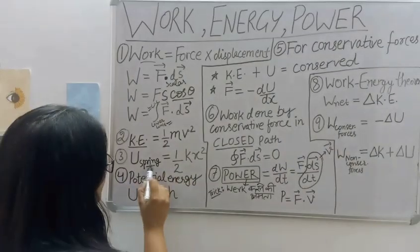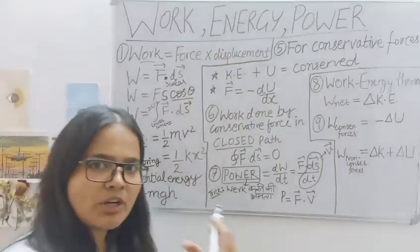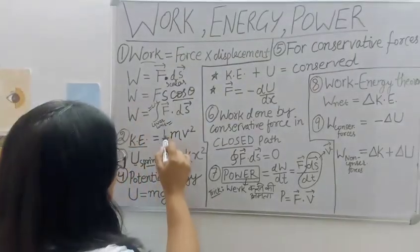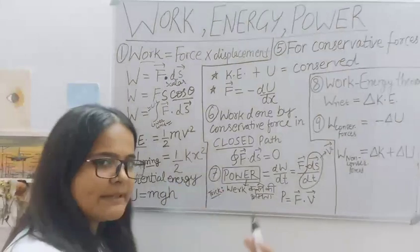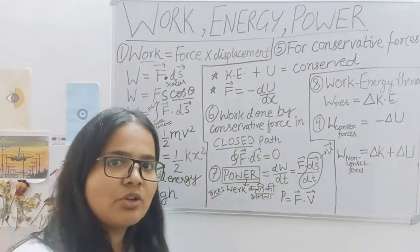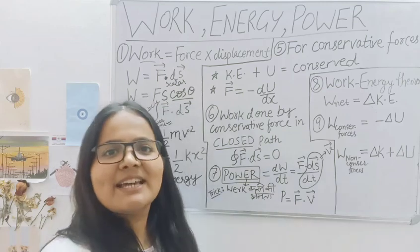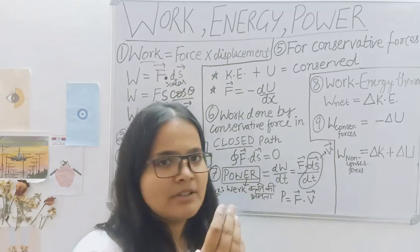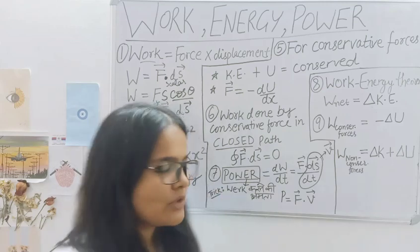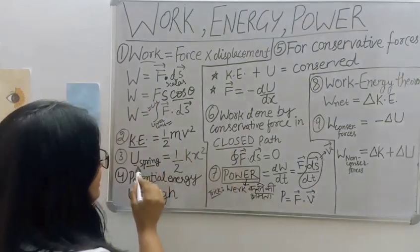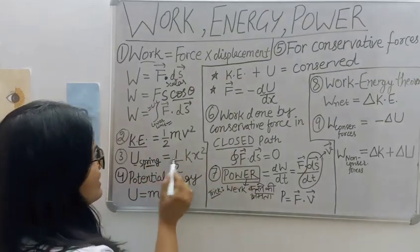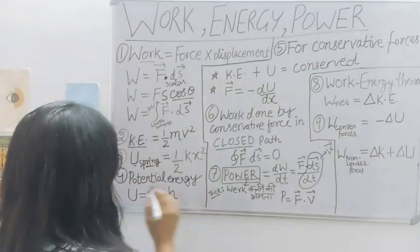Now I have put this formula for the potential energy of spring. Because you will see the two formulas in the same way. So when you will see this video again, then you will easily click on half mv square and half kx square. I will easily remember that kinetic energy is half mv square and the potential energy of spring is half kx square.